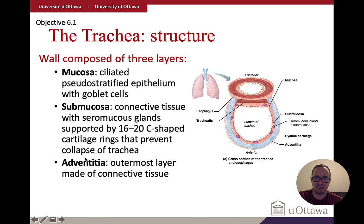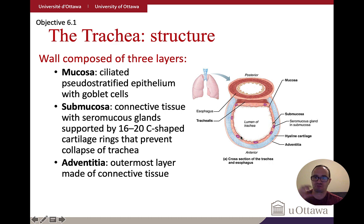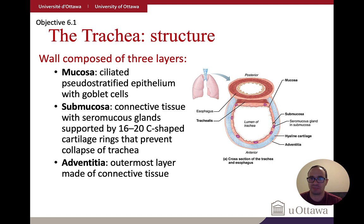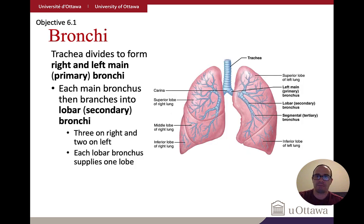Despite the cartilage rings, the trachea remains quite flexible, which is needed to conduct air through the system. It then divides into two bronchi — the right and left — which lead down into the lungs. Note that looking at the body head-on, the patient's right is on your left and vice versa.